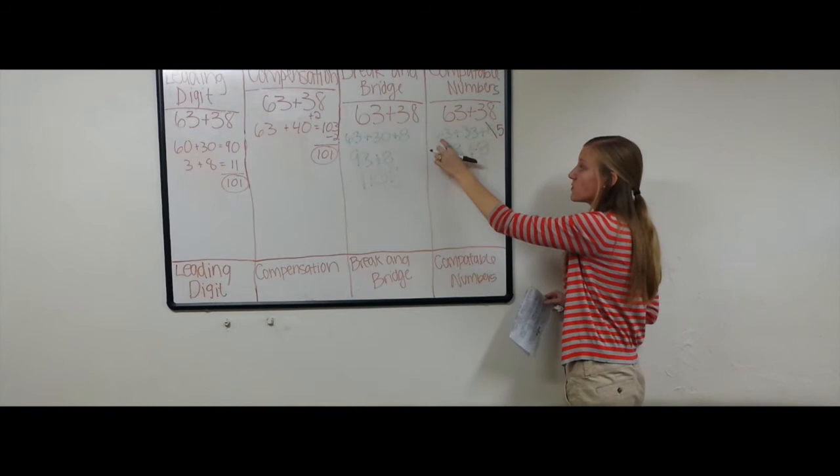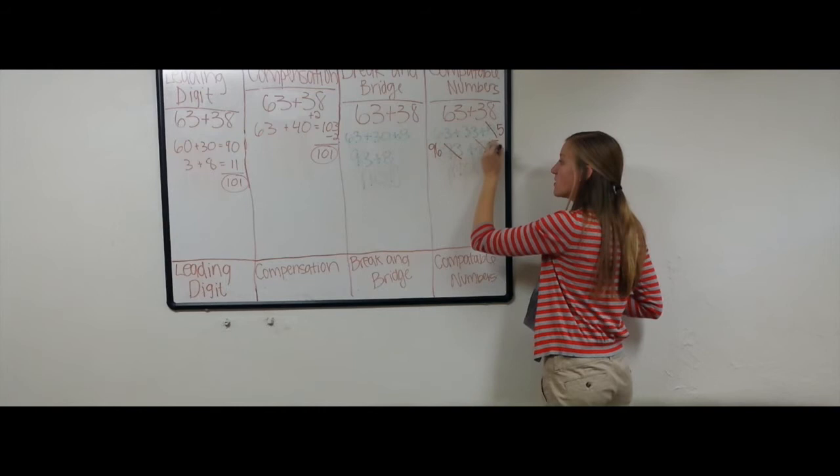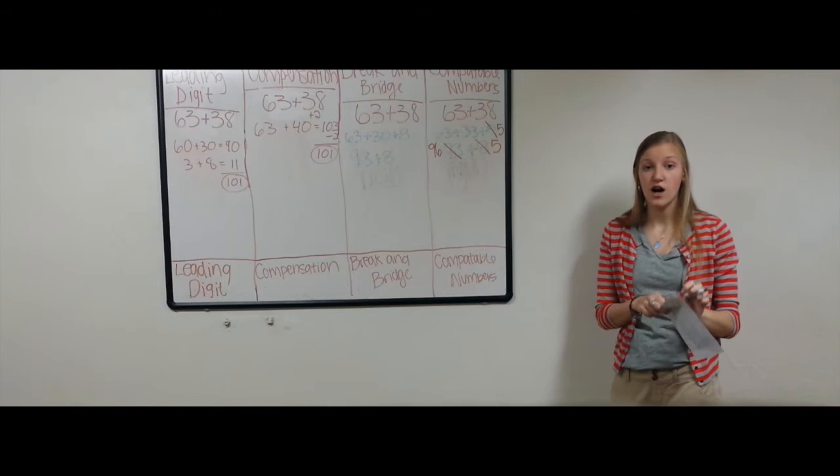Now when we're adding, we have 63 plus 33. That would give us 96. Then we can't forget to add the 5. So 96 plus 5 gives us our answer of 101. As you can see, again, all four ways of adding gave us the same answer of 101.